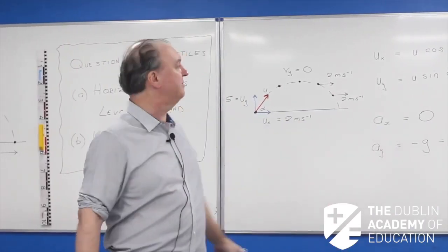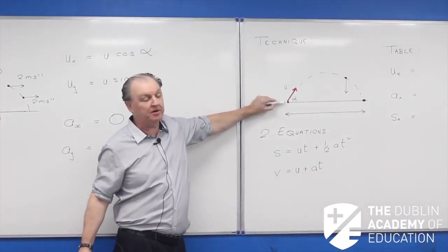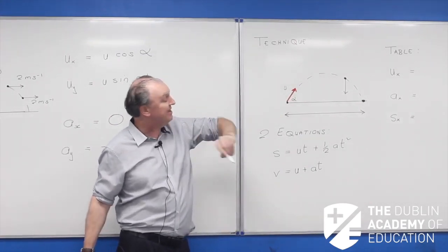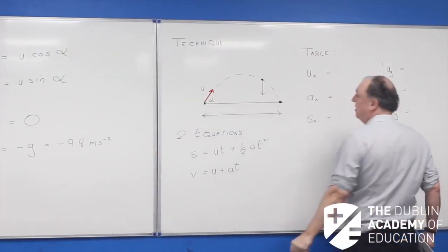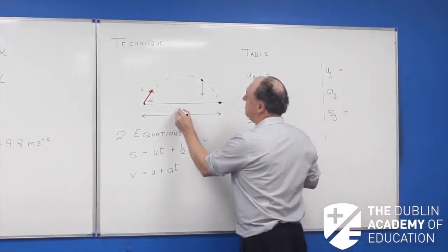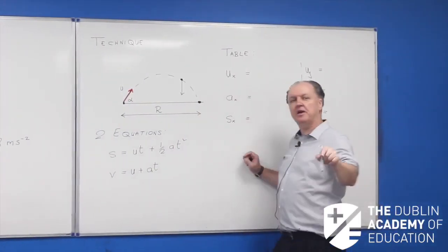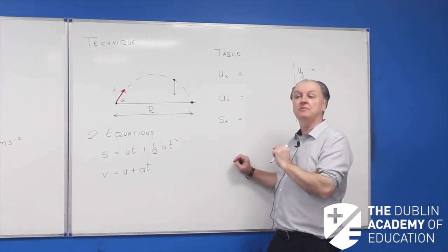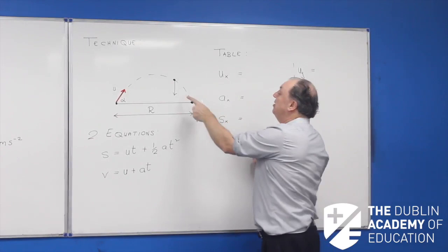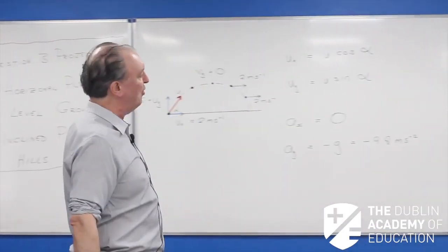Now let's get into the technique. I launch a missile — a tennis ball or javelin — with initial velocity U at angle alpha to the horizontal. It goes through the air and lands. The horizontal distance it travels we call OR, the horizontal range. The only acceleration in its journey is in the Y direction — minus g meters per second squared, which is minus 9.8 meters per second squared.